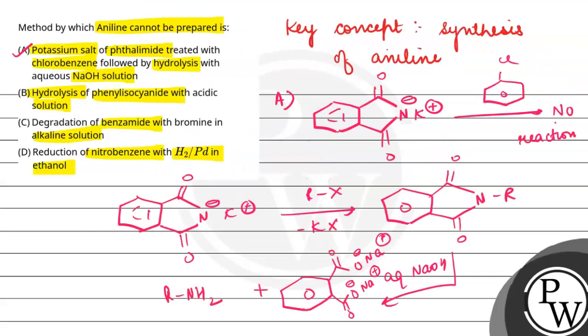So the incorrect option, which we can't use to make aniline, is option A. Hope you found the answer. Best of luck.